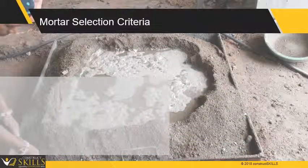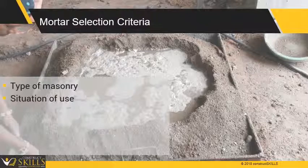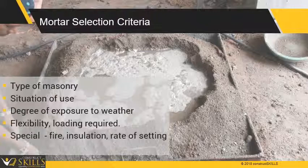Following are the mortar selection criteria for masonry work: type of masonry — brick, stone or concrete blocks; situation of use of the masonry, whether in foundation or superstructure; conditions of surrounding soil in the case of masonry buried below ground level; degree of exposure to weather; flexibility and loading which masonry will have to bear; and special conditions like fire, insulation and rate of setting.